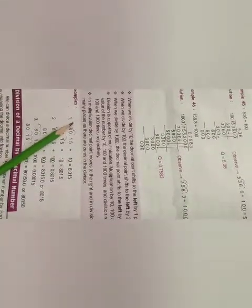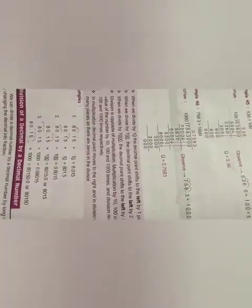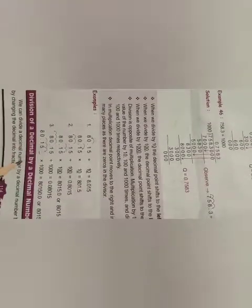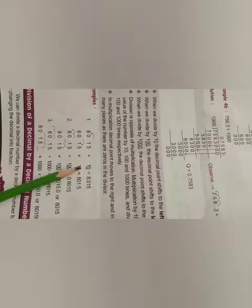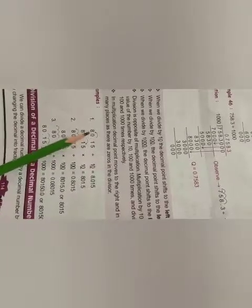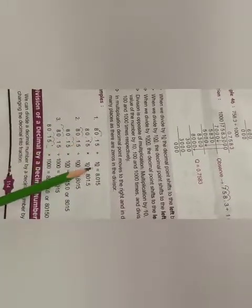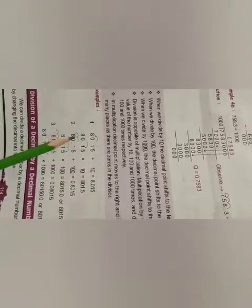As many places as there are zeros in the divisor. For example, 80.15 divided by 10. Here children, you mark, one place moved by left side, means 8.015. But when we multiply these two numbers, this decimal point shifts to right side by one place, means 801.5.